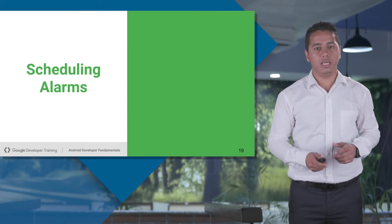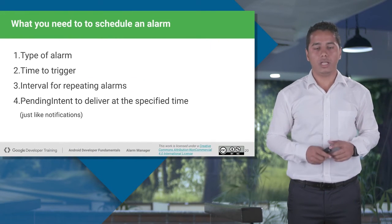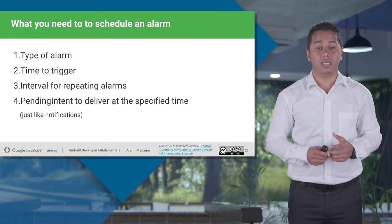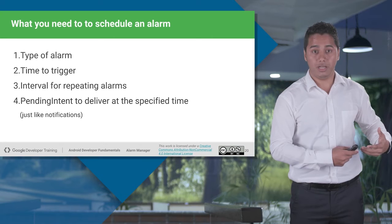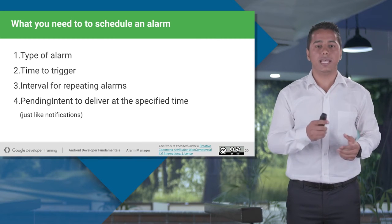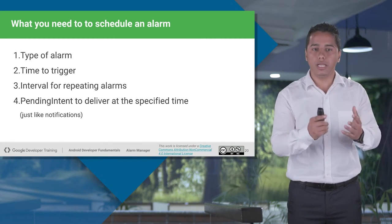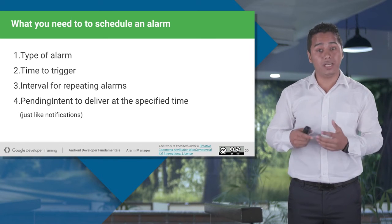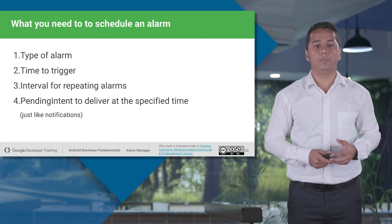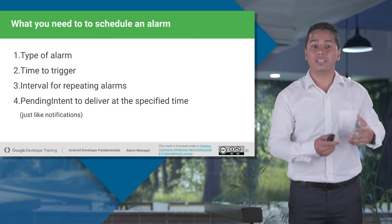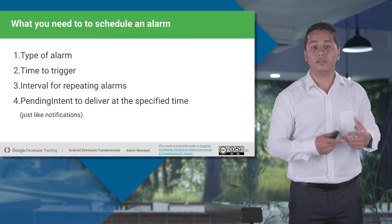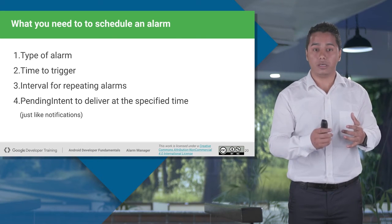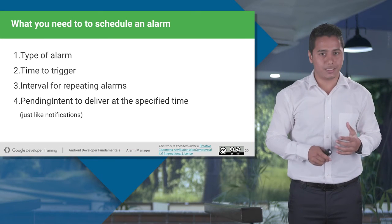Let's look at scheduling alarms. To schedule an alarm, first you need the type of alarm — will it be an elapsed time alarm or an RTC type alarm? Second, at what time you want to trigger the alarm. Third is the interval — if it is going to be a repetitive alarm, after what interval do you want to repeat it? Fourth, it's going to be a pending intent, which means it's going to wait for your alarm to trigger, and there will be an intent which will be calling your broadcast receiver.